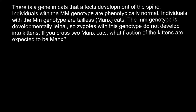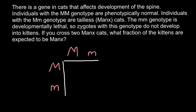We are told we have to cross two Manx cats, and Manx cats are heterozygous, so the genotype would be capital M and small m. One cat and the other cat are both heterozygous. When we build a Punnett square, we can predict the outcome of such a cross — all the genotypes and phenotypes in the progeny.